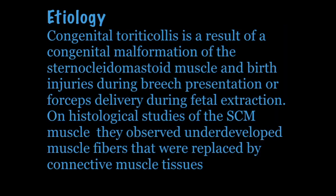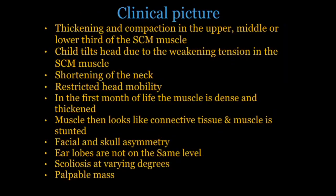Briefly on etiopathogenesis: the contracture of the sternocleidomastoid muscle occurs when the muscle is damaged during childbirth, leading to formation of a hematoma, followed by subsequent scarring, which then leads to contracture. Clinically, there is thickening and compaction of the upper, middle, or lower third of the sternocleidomastoid muscle.